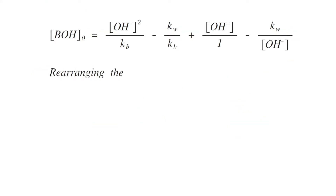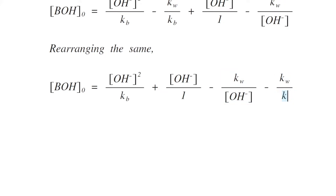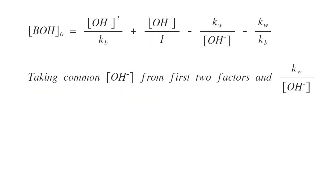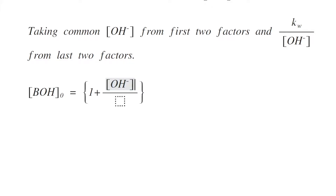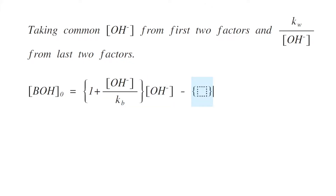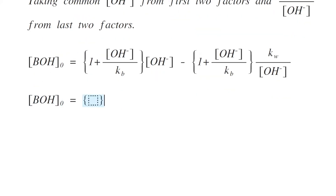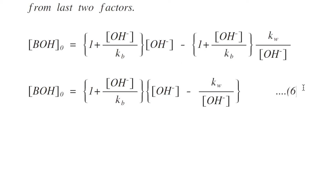Rearranging the same equation, [BOH]₀ equals [OH⁻]²/Kb plus [OH⁻] minus Kw/[OH⁻] minus Kw/Kb. Taking [OH⁻] common from the first two factors and Kw/[OH⁻] from the last two factors, it becomes (1 + [OH⁻]/Kb) multiplied by ([OH⁻] minus Kw/[OH⁻]). This is equation number six.